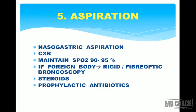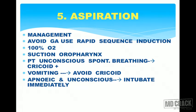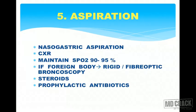Perform nasogastric aspiration and obtain a chest X-ray. Maintain SpO2 between 90 to 95 percent. If a foreign body is present, use rigid or fibreoptic bronchoscopy to remove it. Use steroids and prophylactic antibiotics. To summarize: avoid GA, use rapid sequence induction, maintain cricoid if spontaneously breathing, avoid cricoid if vomiting, immediately intubate if unconscious, perform nasogastric aspiration, do chest X-ray, maintain SpO2, remove foreign body bronchoscopically, and use steroids and antibiotics.